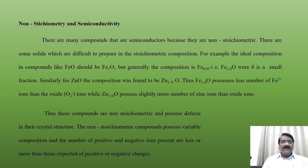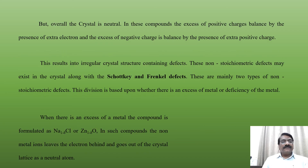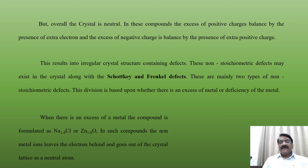Non-stoichiometric compounds possess variable composition, and the number of positive and negative ions present are less or more than those of expected positive or negative charges, but overall the crystal is neutral. The excess of positive charges is balanced by the presence of extra electrons, and the excess of negative charge is balanced by the presence of extra positive charges. This results in an irregular crystal structure containing defects. These non-stoichiometric defects may exist in the crystal along with Schottky and Frenkel defects. There are mainly two types of non-stoichiometric defects.